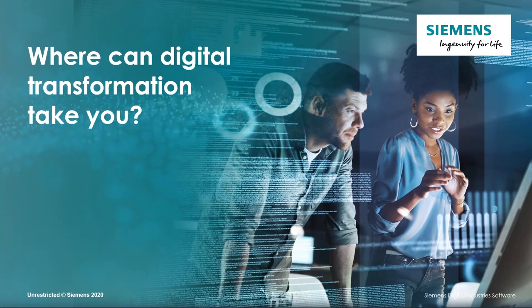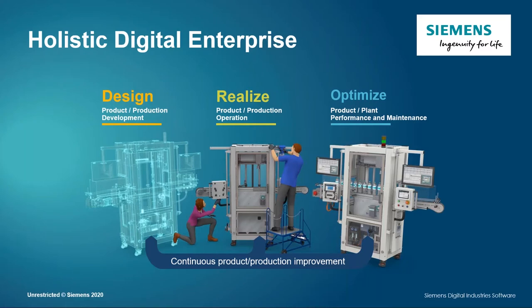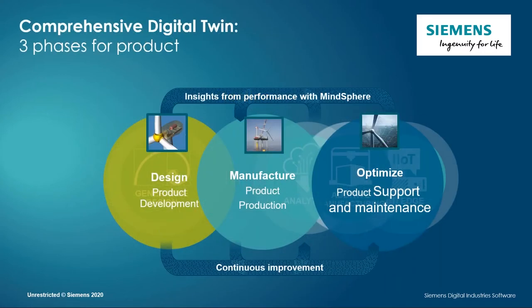I'm going to start with the question: where can digital transformation take you? How can you use this digital transformation to make your business more productive and more profitable? There are typically three different main pieces to your business process: design, where you're doing product design and development; then you have to realize those products through manufacturing and other production processes; and finally, you have to optimize those products.